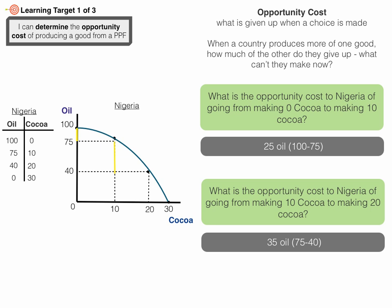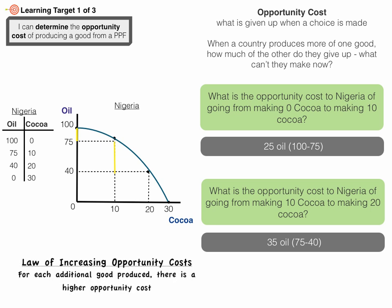Notice that each time Nigeria chose to make 10 more cocoa — going from 0 to 10 or from 10 to 20 — the opportunity costs were different; they increased. This represents the law of increasing opportunity costs, which says for each additional good produced, there is a higher opportunity cost. This is why the PPF is traditionally bowed outward. Sometimes we see straight-line PPFs, which represent constant opportunity costs, but more often opportunity costs are increasing because the first resources chosen for a good are the best fit for that good.